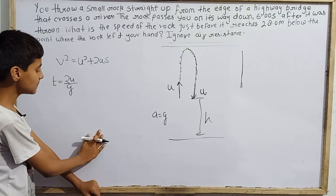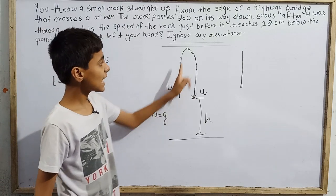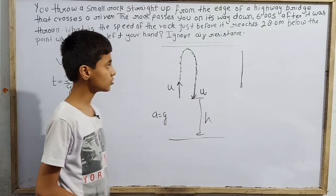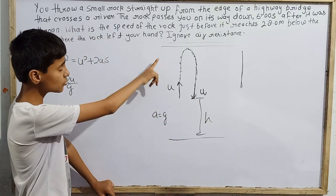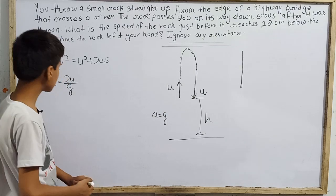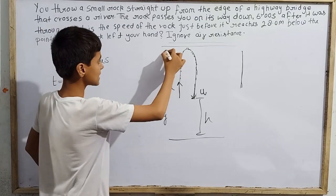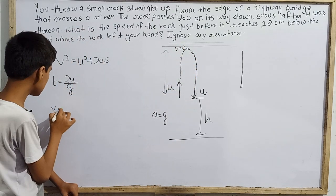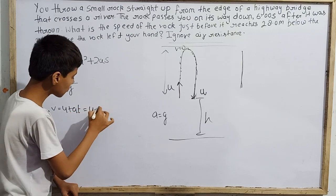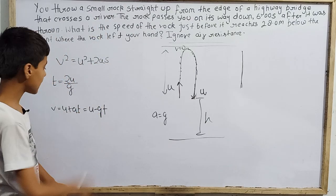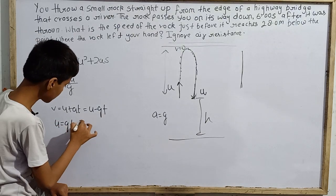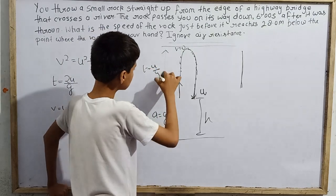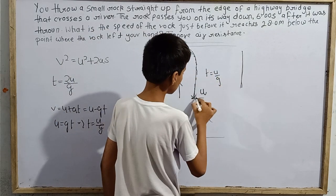2U by g. When t equals 0 to t equals 2U by g, then the particle comes back to that point. This equation derivation is not complex. You can derive it using many formulas. From here to maximum height takes U by g, from maximum height back down takes U by g. The total time is 2U by g. How did U by g come? From here to maximum height, the speed is 0. That is very easy: V = U + at. Here velocity is U minus gt. Upward velocity, downward acceleration. Then U equals gt. So the time value is U by g. Same time going up and coming down, so total time is 2U by g.